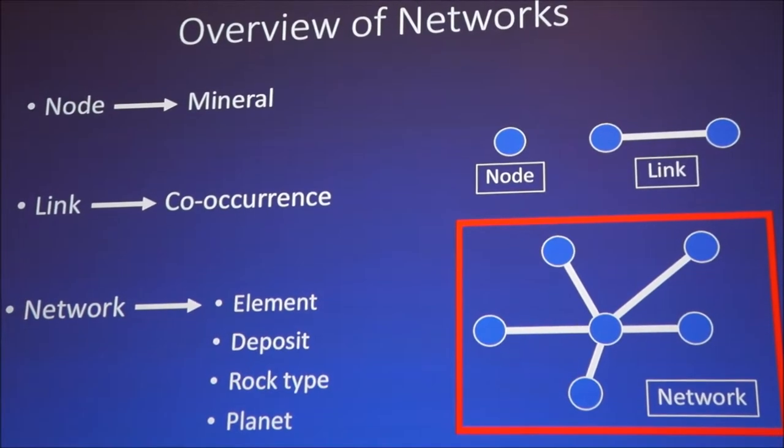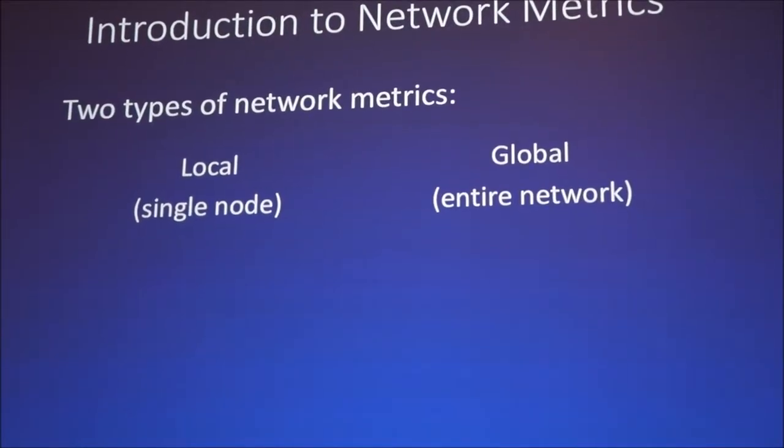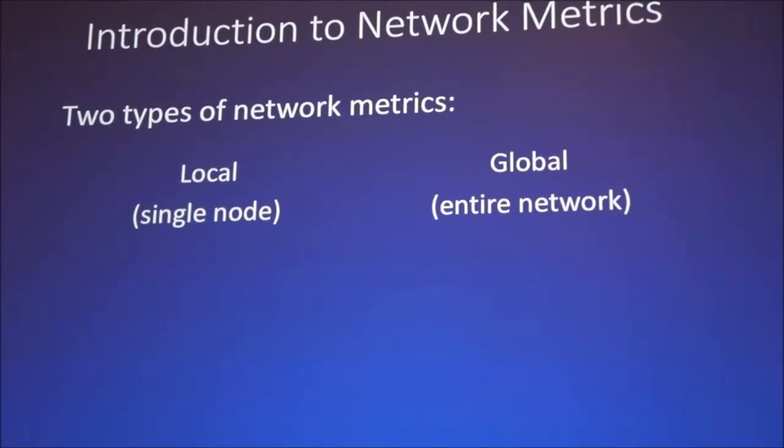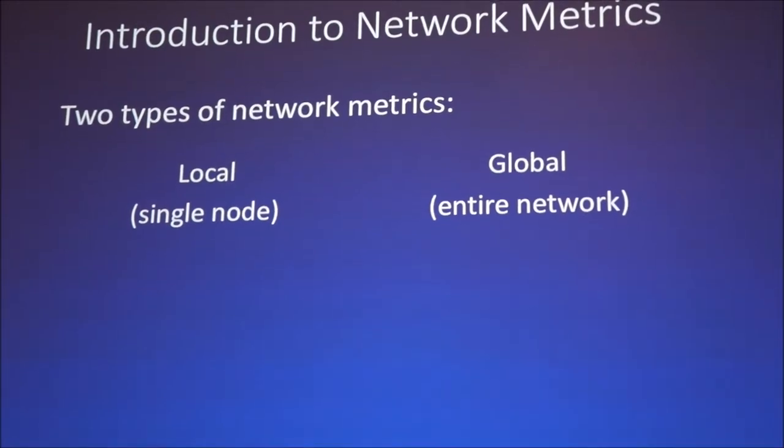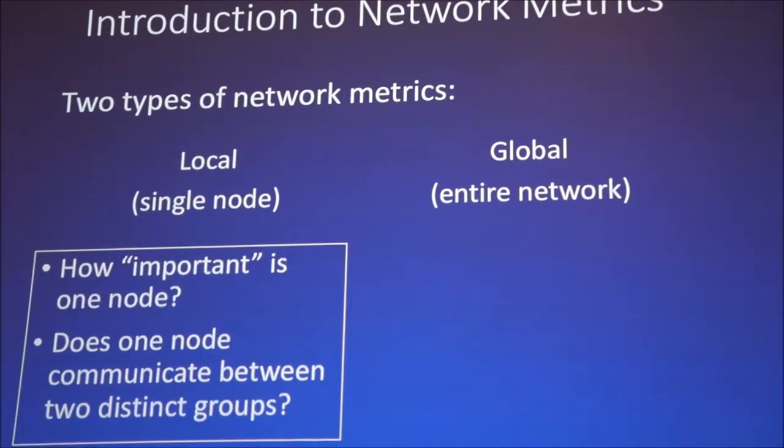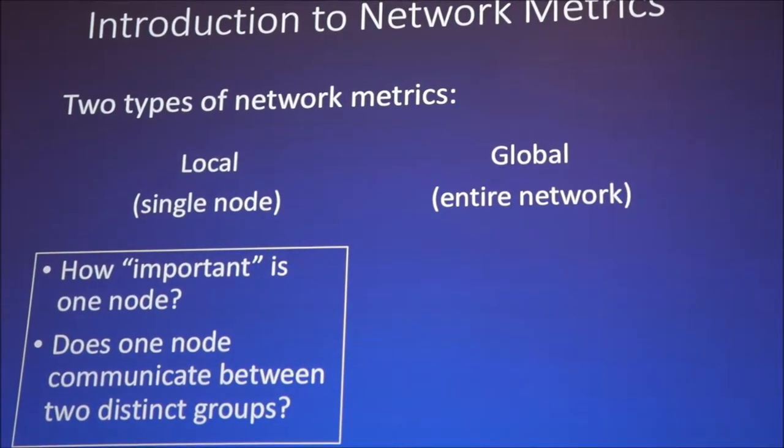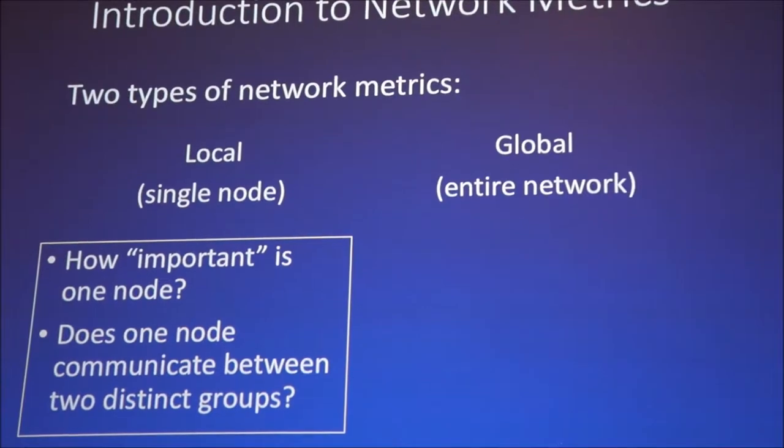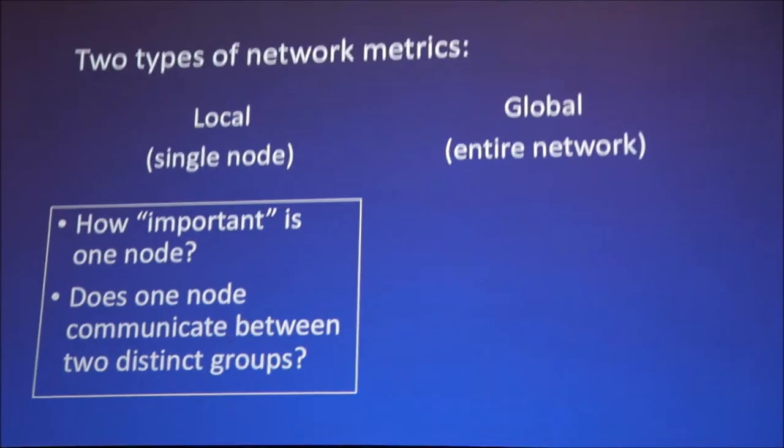Great, so now to talk about these metrics. There are two different types of metrics. The first is local, and that applies to an individual node in the network. This can help answer questions like how important is this one node, and does one node communicate between two distinct groups? Is a node a broker in between two different systems?